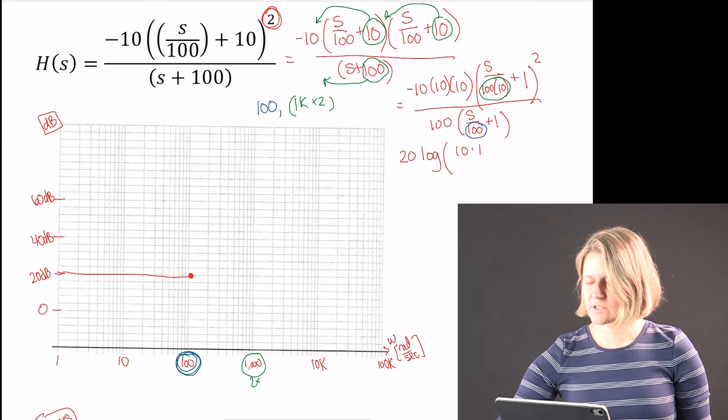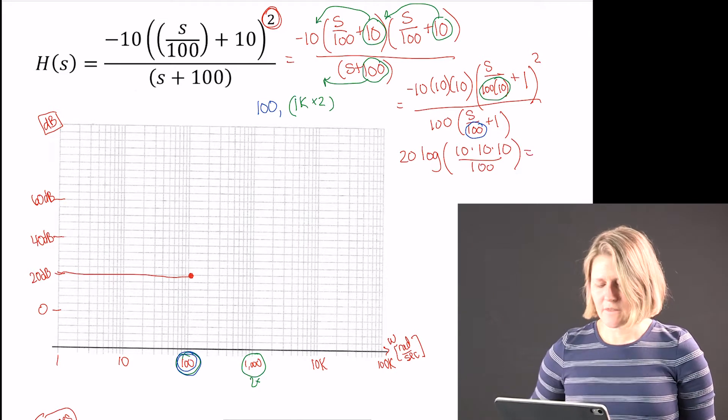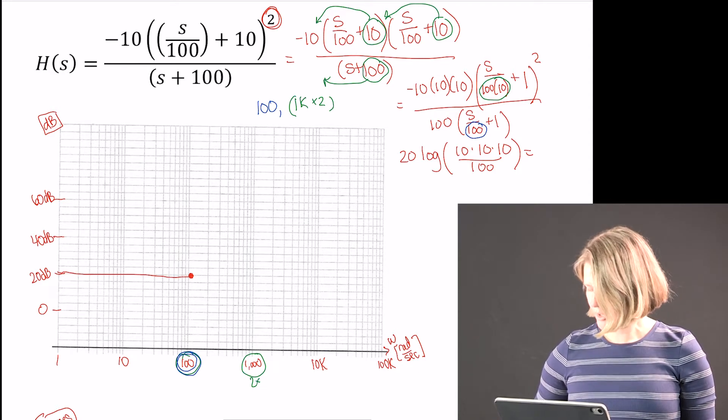So 10 times 10 times 10 over 100, and that ends up giving me a value of 20 dB.